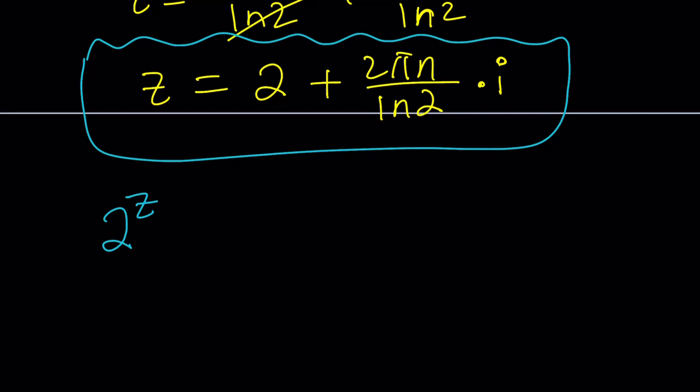So 2 to the z equals 4. Obviously, z equals 2 is an obvious solution. But how does that come from here? If you replace n with 0, you get z equals 2. So that's a particular value for a certain choice of n.